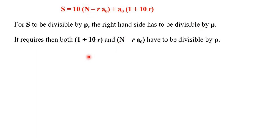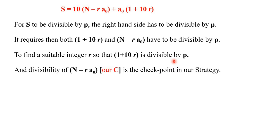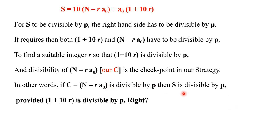Now that means it requires both (1 + 10r) and (N - ra₀) to be divisible by p. That means you have to find a suitable integral integer r so that (1 + 10r) is divisible by p. And what about the other term N minus ra₀ and that is our checkpoint in our strategy, that it has to be divisible, then only S is divisible by p. So we are concerned for the time being (1 + 10r) that has to be divisible for a particular suitable r. So in other words, if C equals to N minus ra₀ is divisible by p, then S is divisible by p, provided (1 + 10r) is divisible by p.